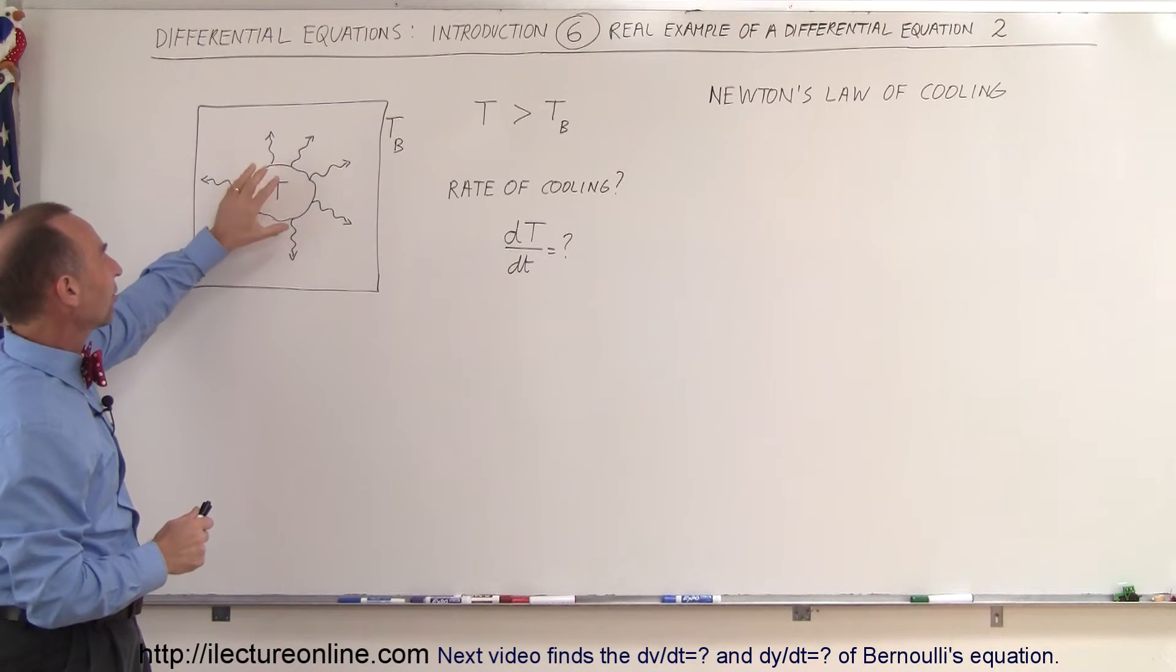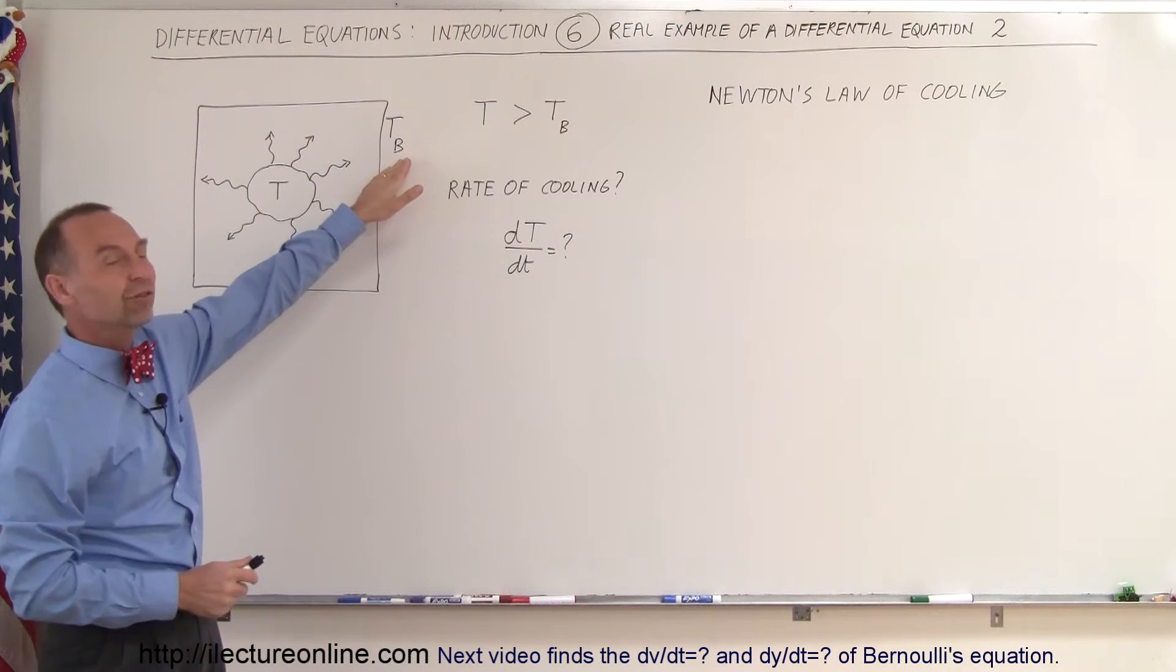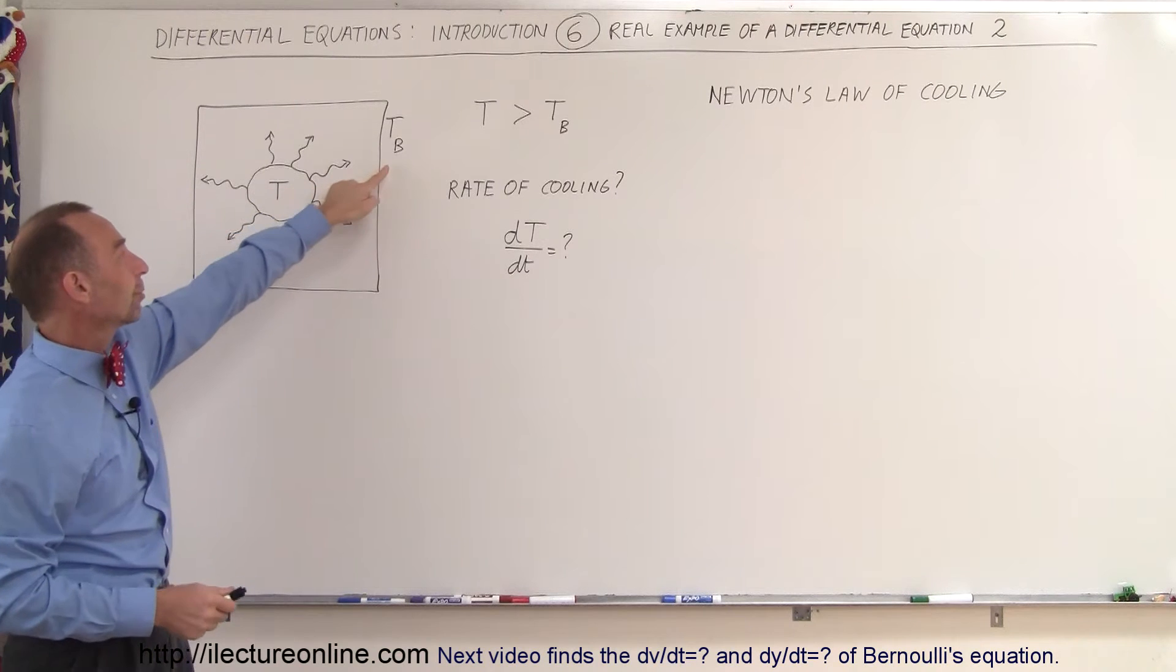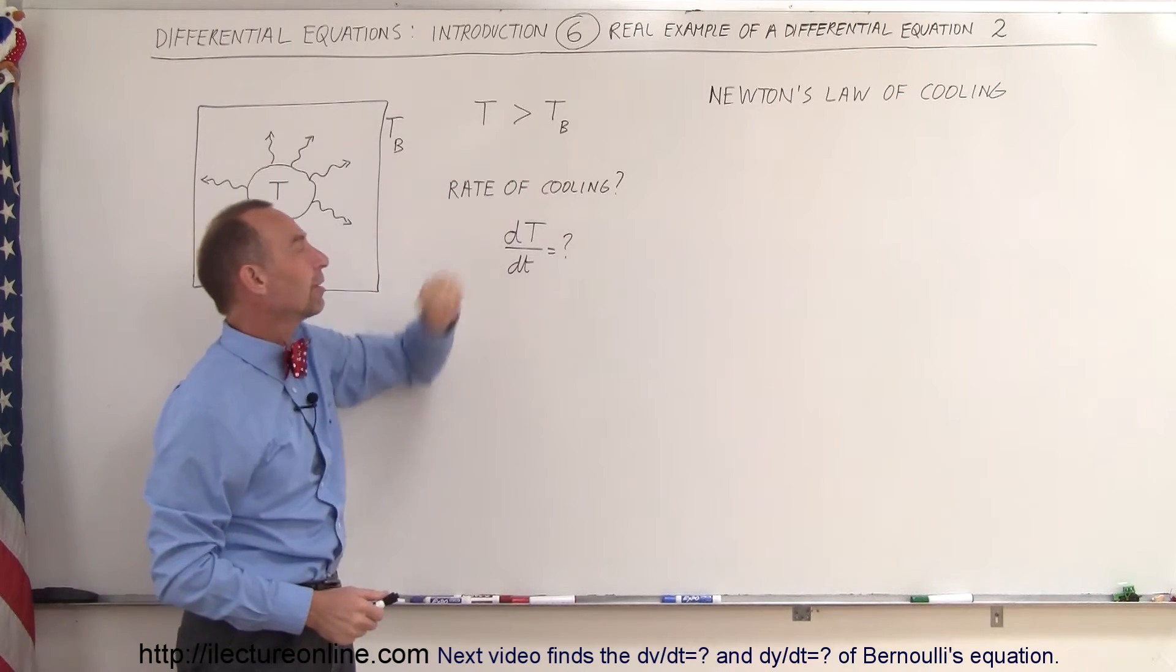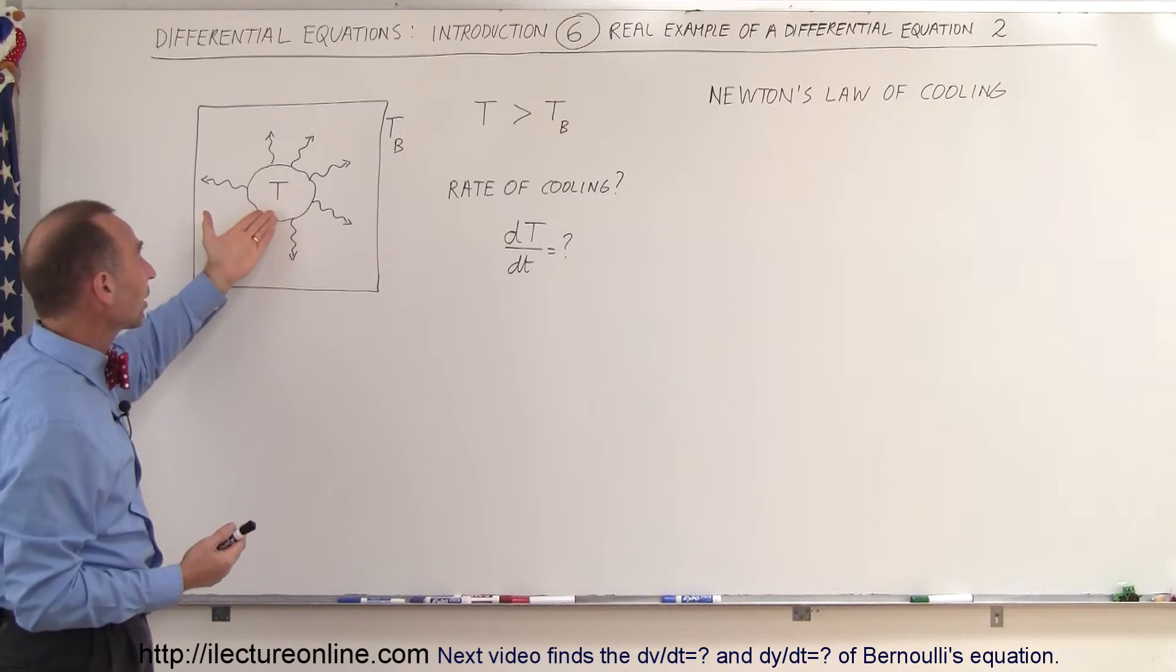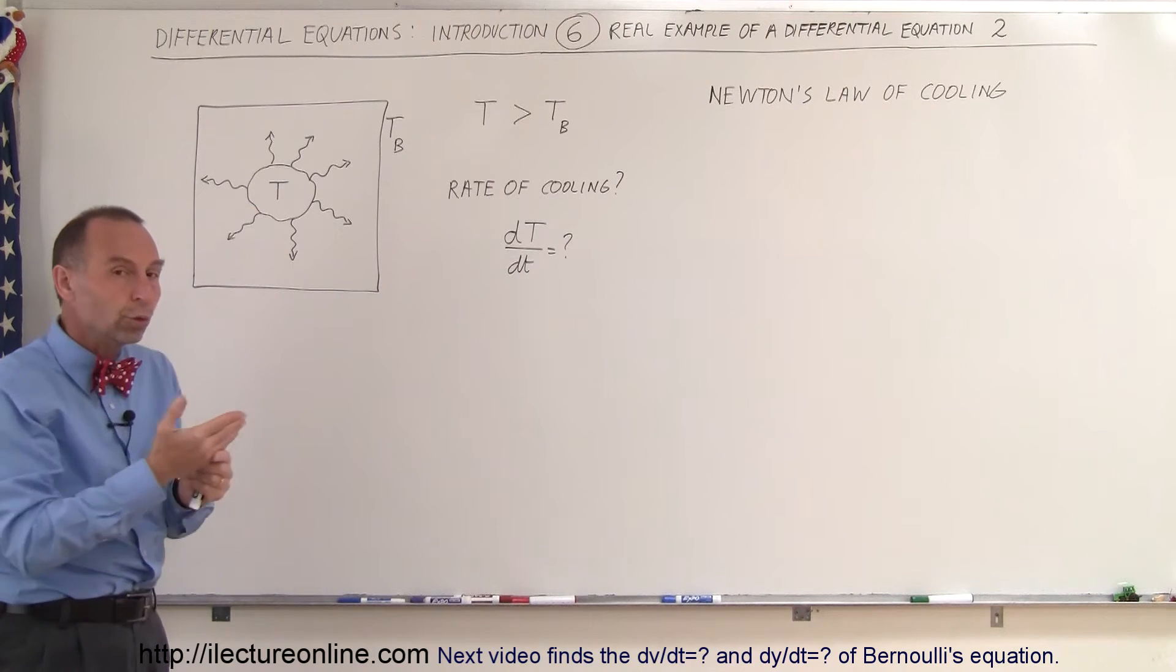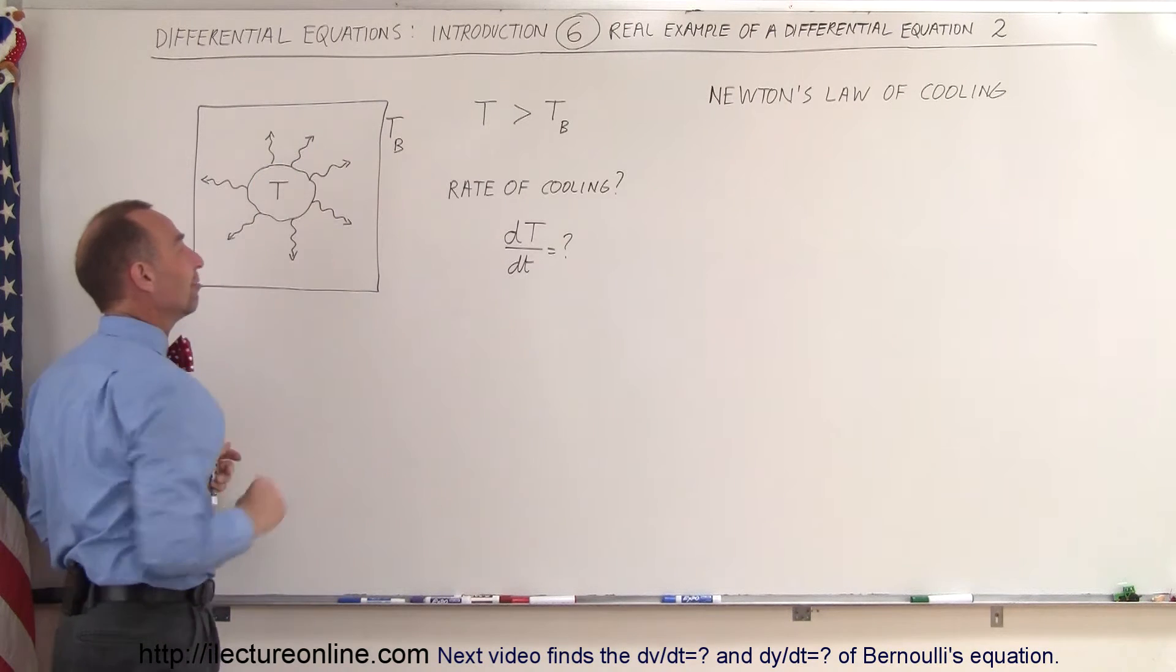So here we have an object that is a temperature T, and it's enclosed in an environment that's a temperature T sub e. And assuming that the temperature of the object is warmer than the temperature of the environment, so T is greater than T sub e. And the question is, how fast will this object cool down? And it turns out that the rate at which the object will cool depends upon the difference in the temperature between the object and its environment.